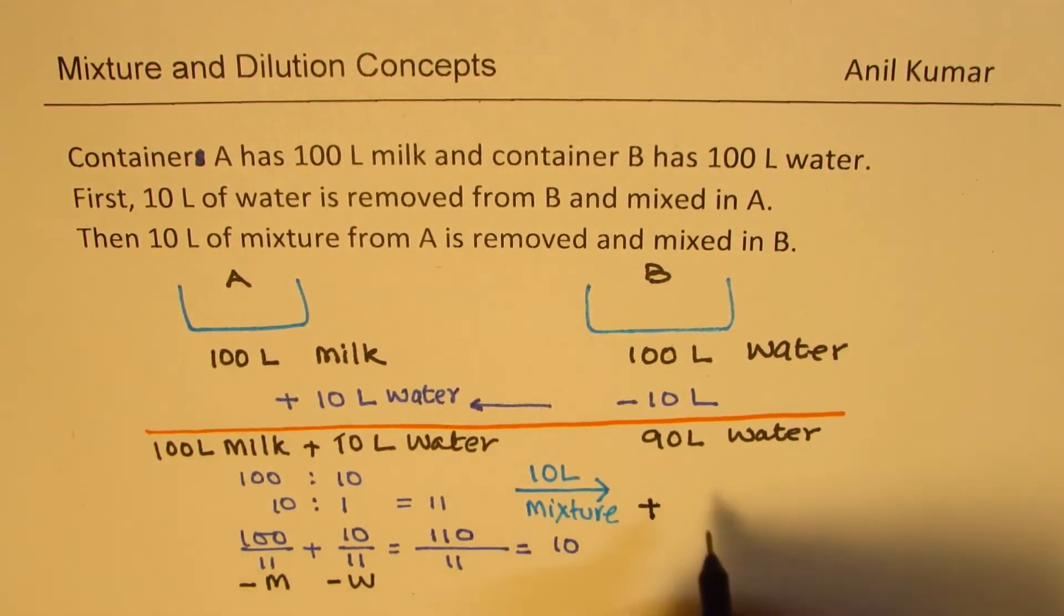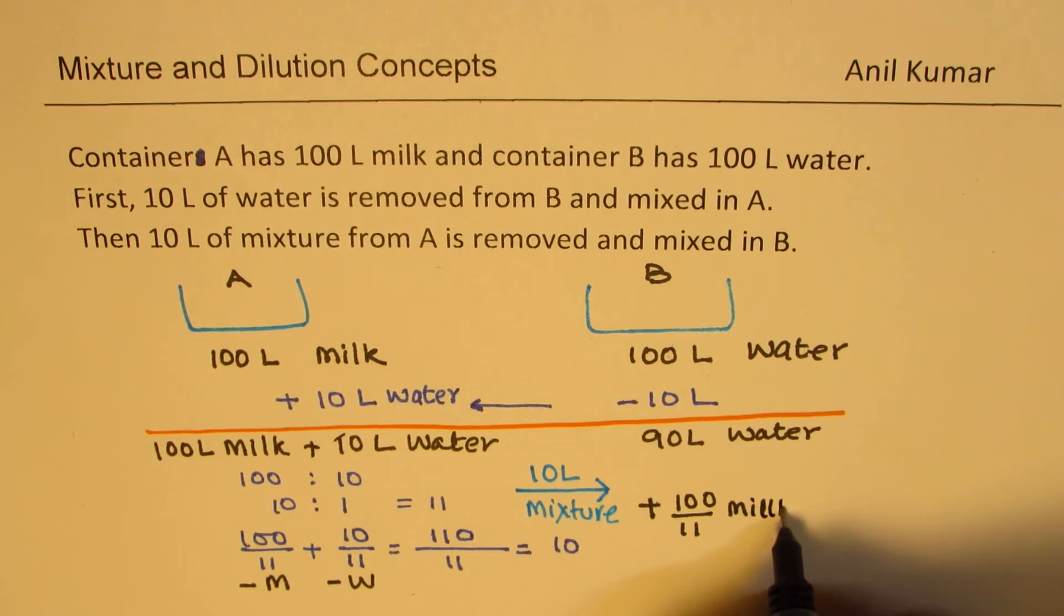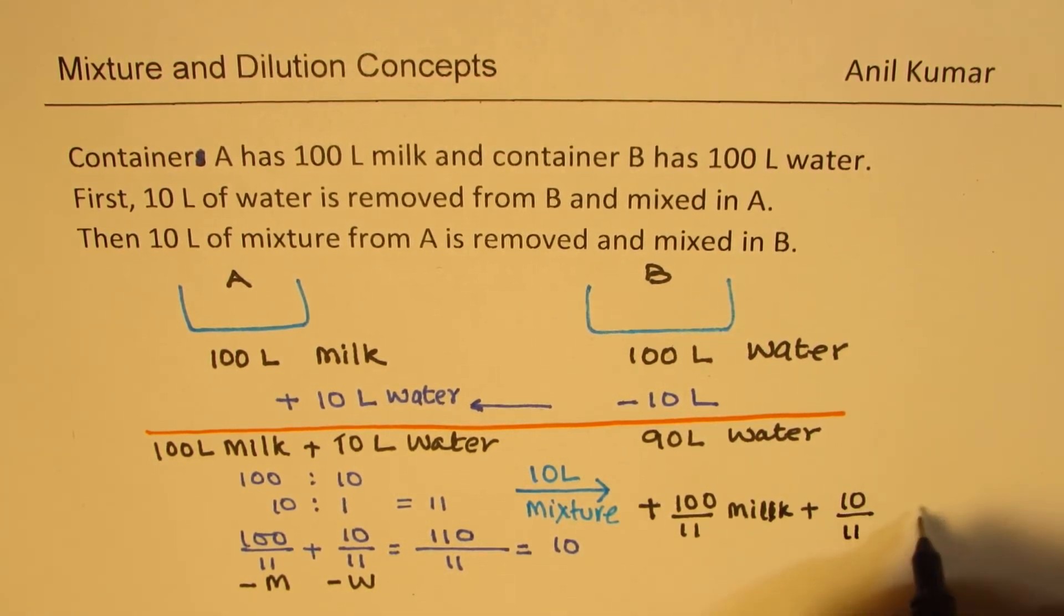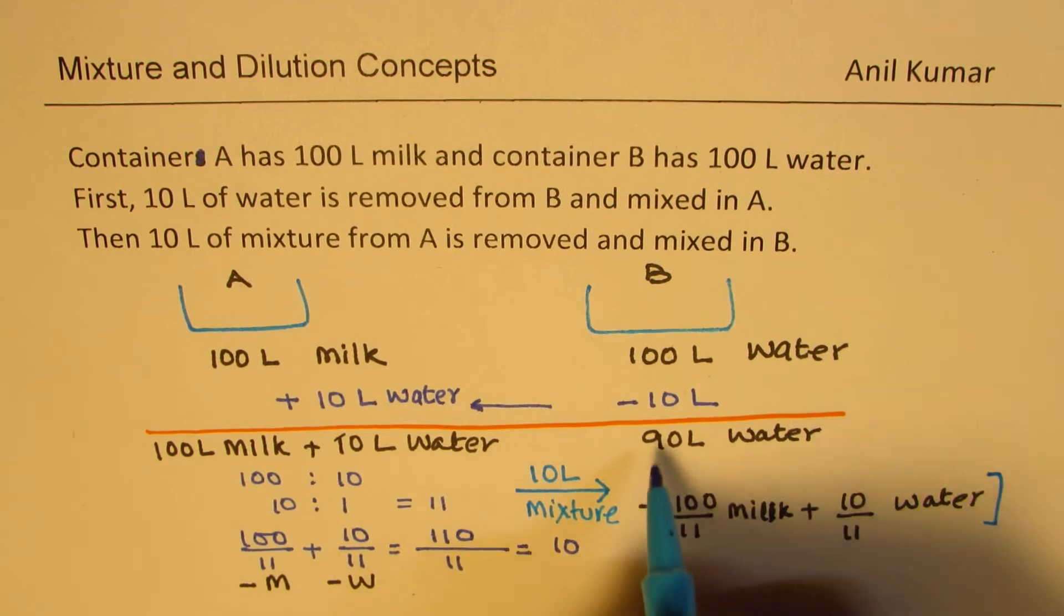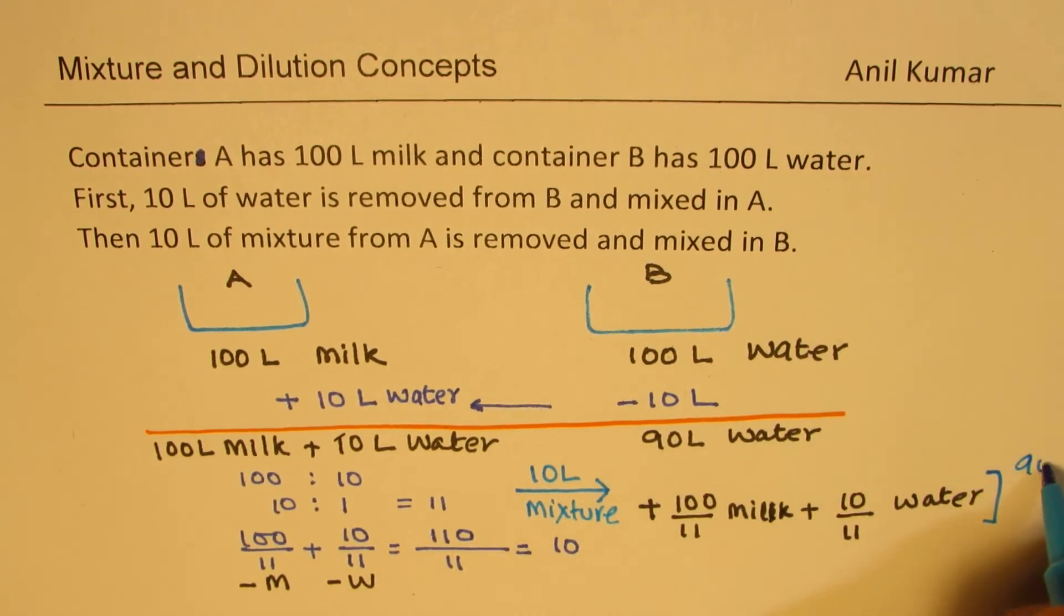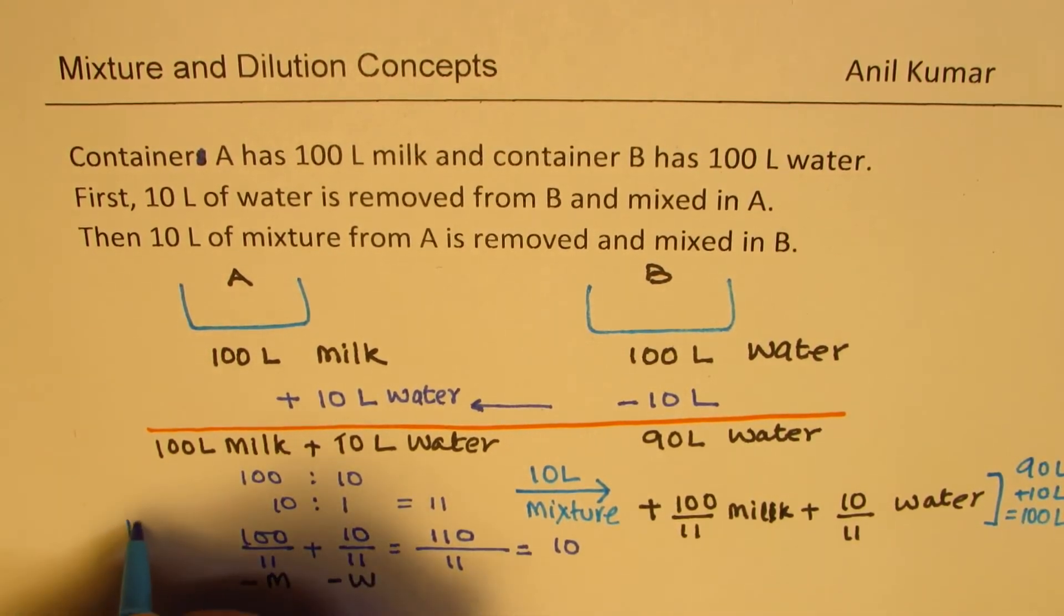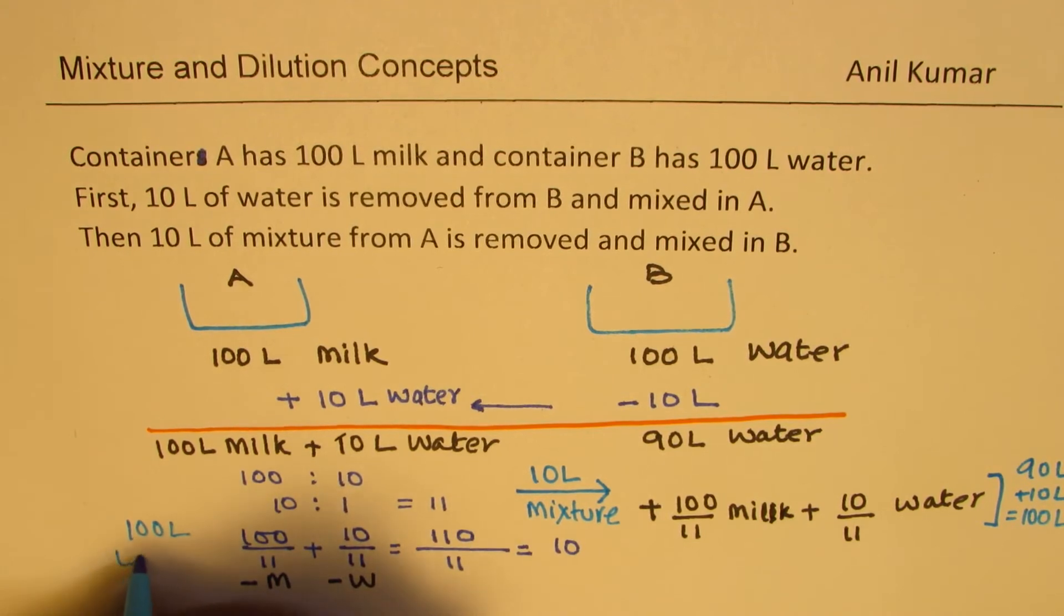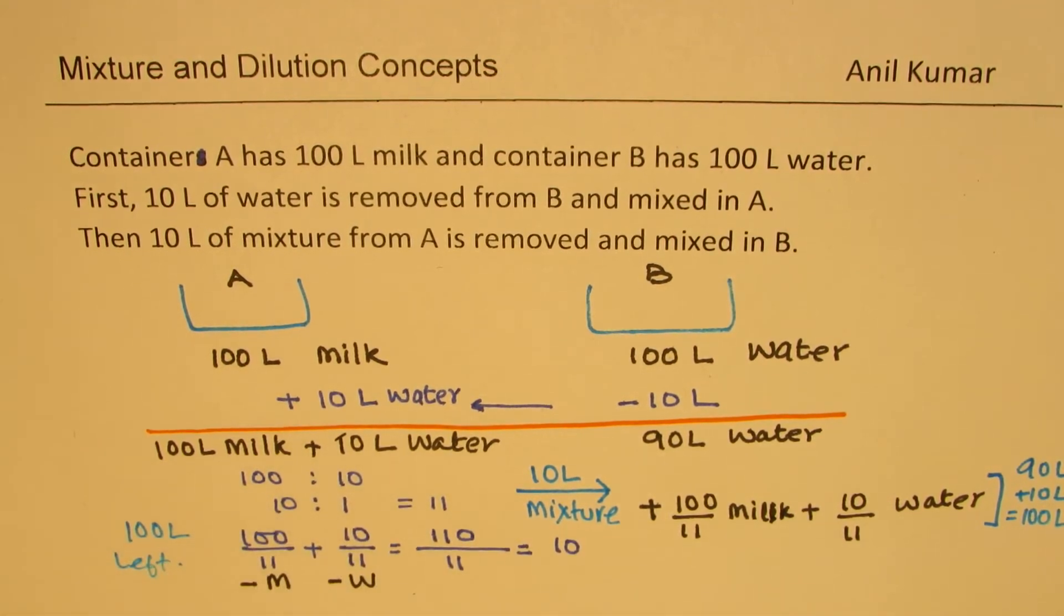So that means in this particular solution what are we adding? We are adding 100 over 11 of milk plus we are adding 10 over 11 of water. So this is the water. Total still we have 90 plus 10, so we have 100 litres. Here also we have 100 litres left.